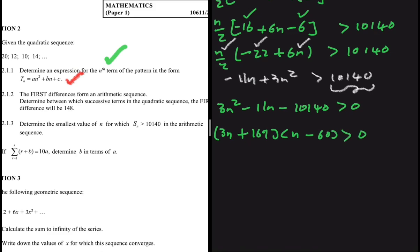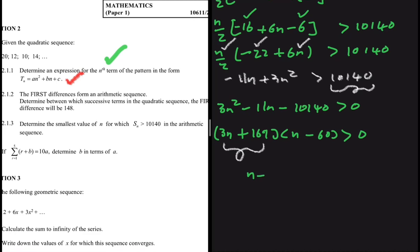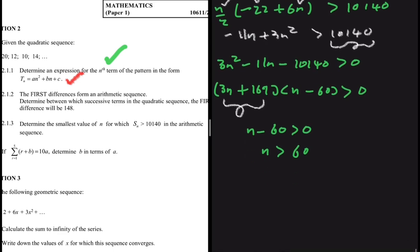Solving the bracket 3n + 169 > 0 gives a negative value of n, which is not valid since there's no negative position. So our solution lies with n − 60 > 0, meaning n > 60. The smallest integer value of n greater than 60 is n = 61. That is the answer to 2.1.3.